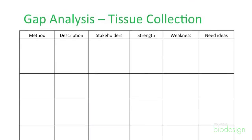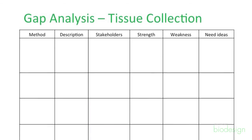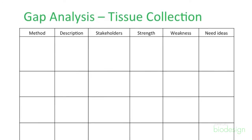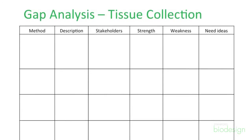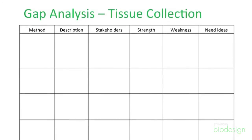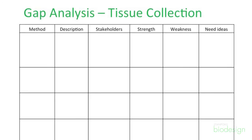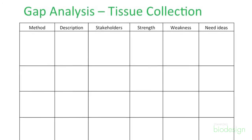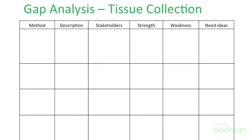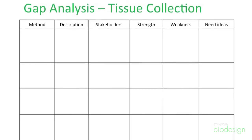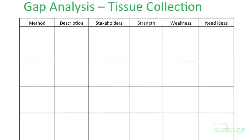To help organize my thinking, I'll make a list of the different methods to collect a tissue sample, a description of that method, the stakeholder who completes that procedure and uses that tool, and the strengths and weaknesses of each method. Along the way, I'll keep brainstorming ways to refine my need.